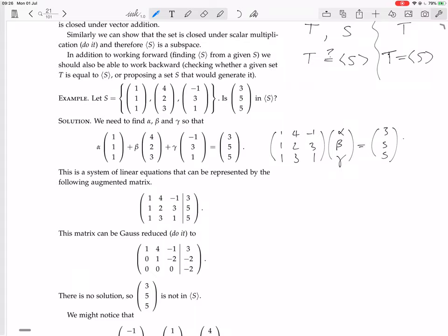So we do row 2 minus row 1 and row 3 minus row 1. We're going to get (1, 4, −1). (1, 0, −2), 3 minus (−1), so that's going to be 4. 0, 3 minus 4 is −1, 1 minus (−1) is 2.